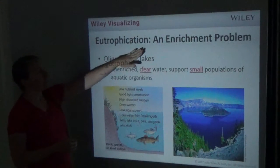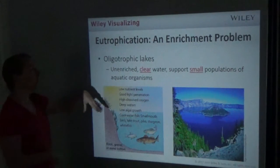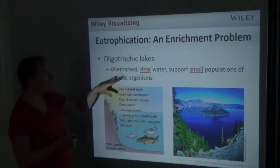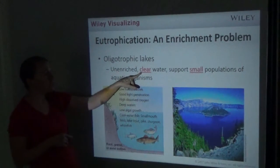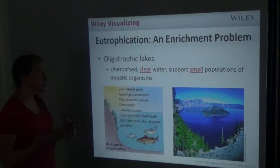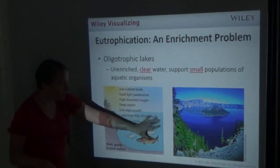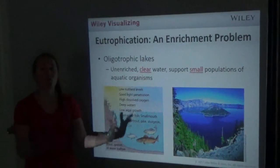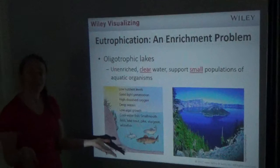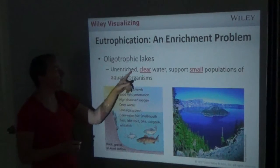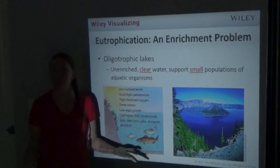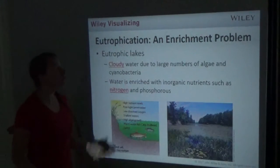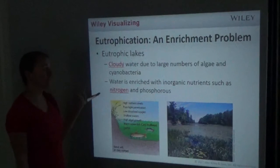When a body of water is enriched, that's called eutrophication. Oligotrophic lakes are unenriched — the water is very clear and they have small populations of aquatic organisms. This would just be the normal pond or lake scenario, not over-fertilized with runoff from sources like sewage.